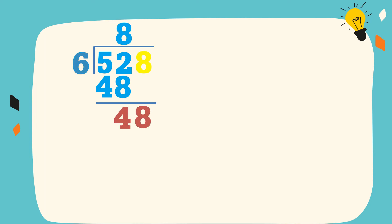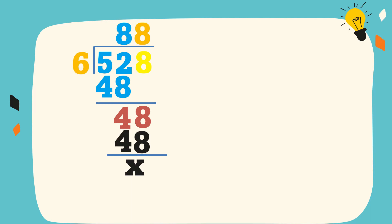48 divided by 6 is equal to 8. 8 times 6 is equal to 48. 48 minus 48 is equal to 0. Therefore, the quotient is 88.